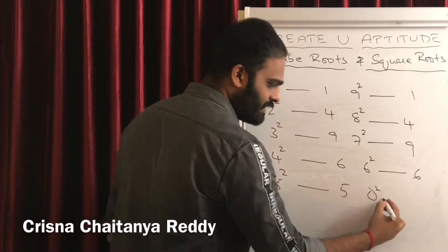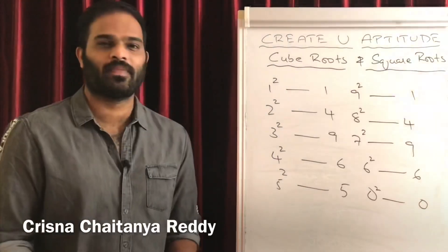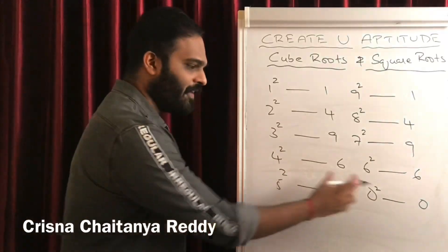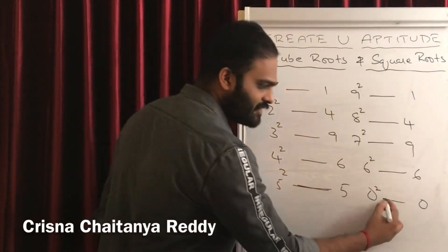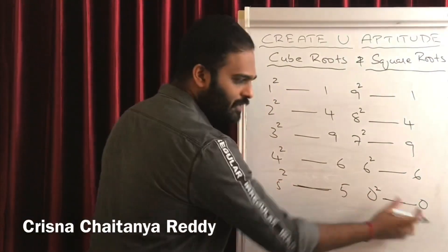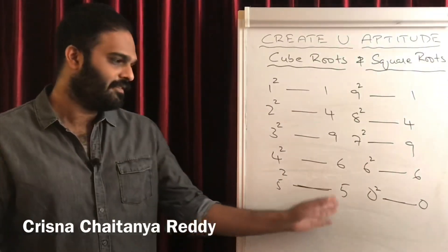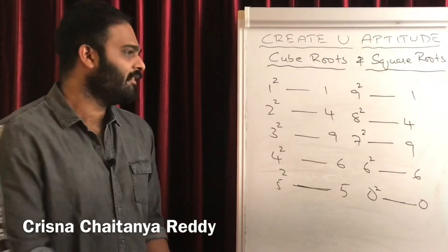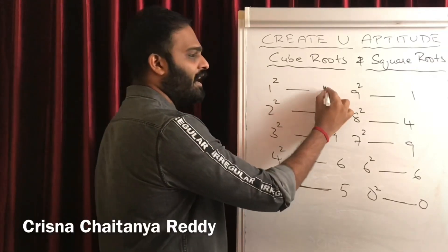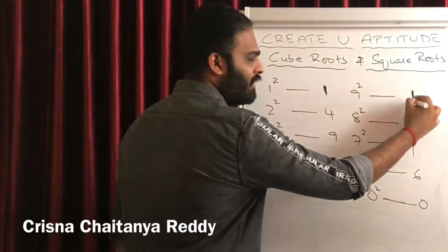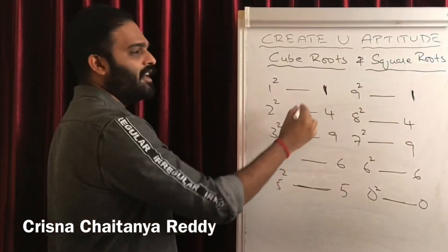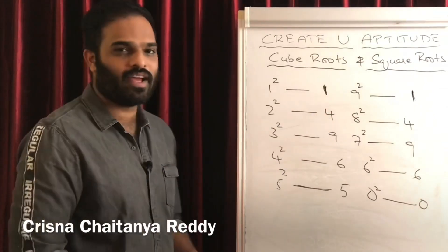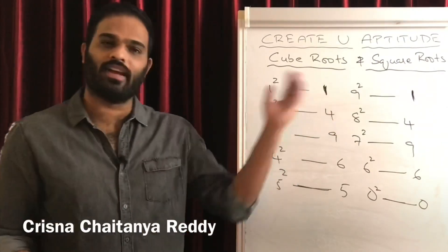And 0 square — 10 square is ending with 0. Observe this table very clearly. Except 5 and 0: 5 square is ending with 5, 0 square is ending with 0. These two numbers are appearing only once. But when you observe the remaining things, 1 square is ending with 1 and 9 square is also ending with 1. That means whenever your question is ending with 1, it could be a square of 1 or a square of 9.